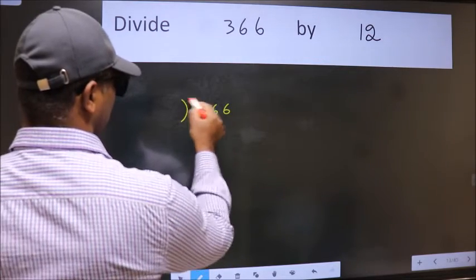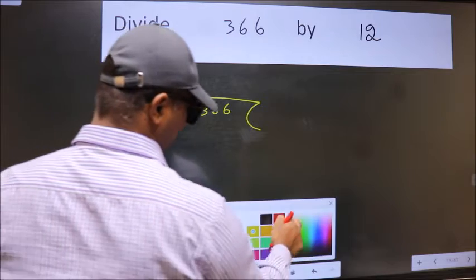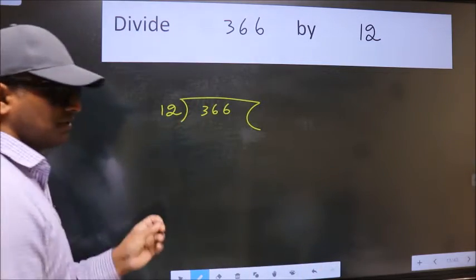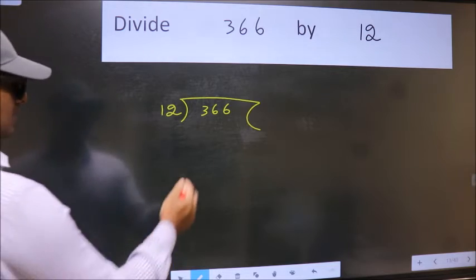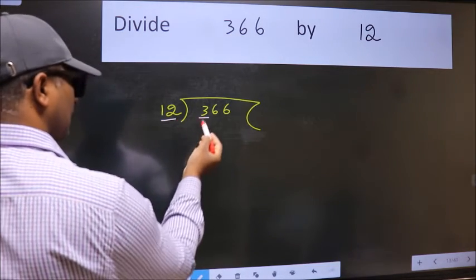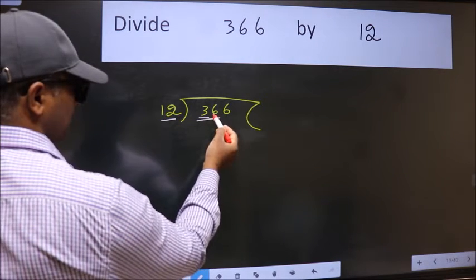366 here, 12 here. This is your step 1. Next, here we have 3 and here 12. 3 is smaller than 12, so take two numbers: 36.